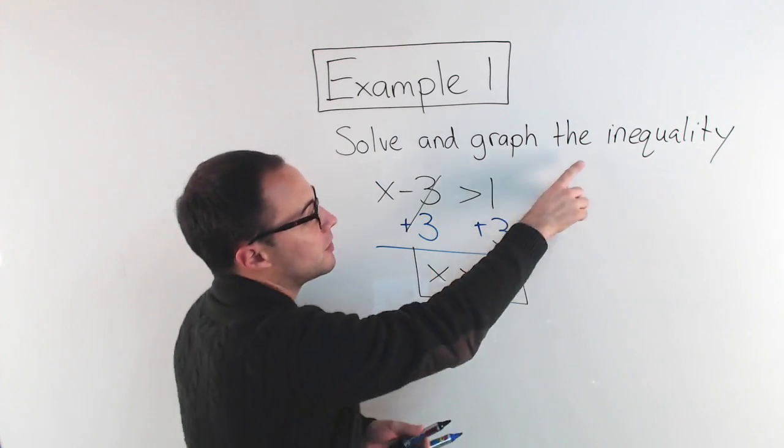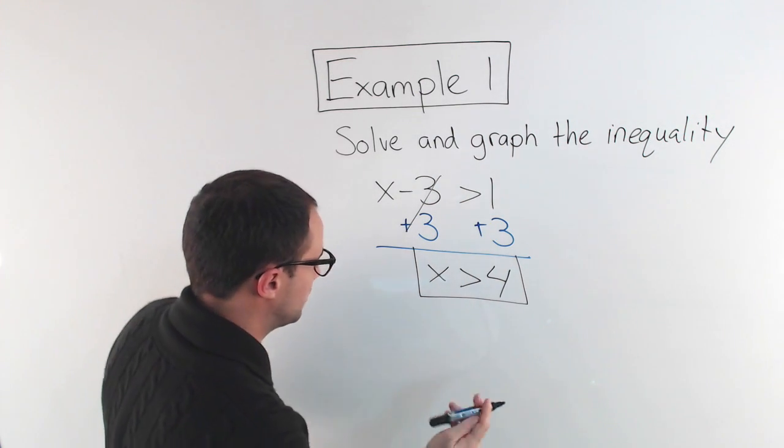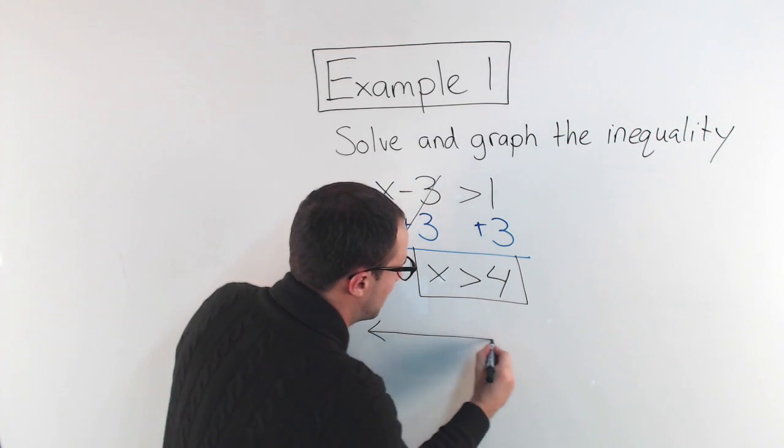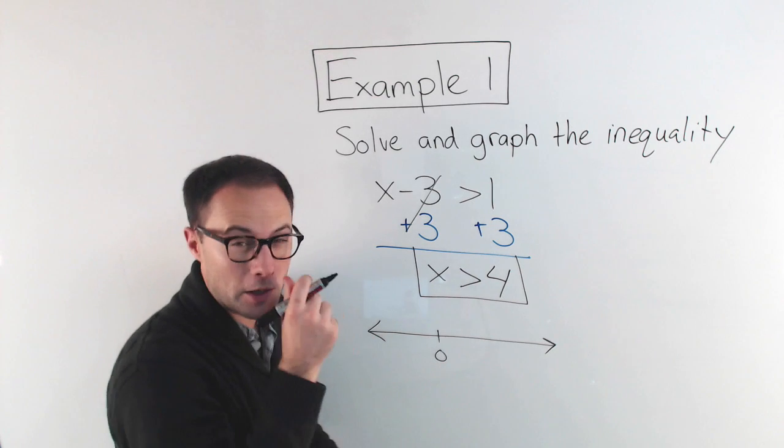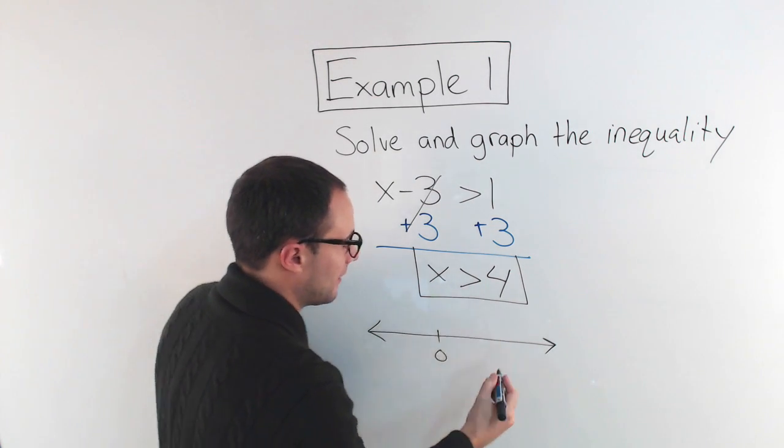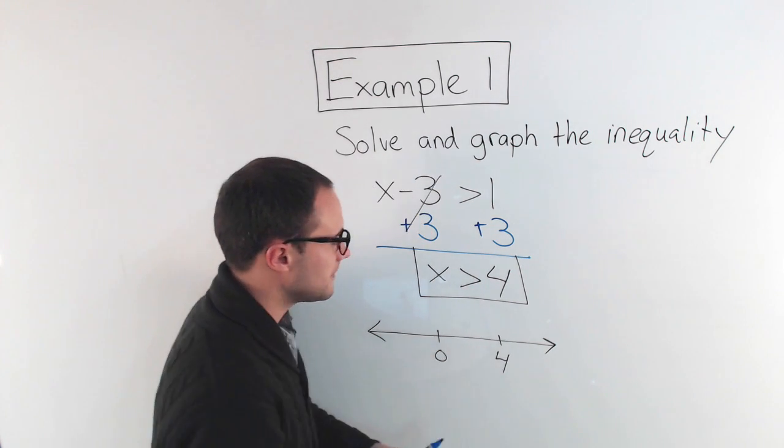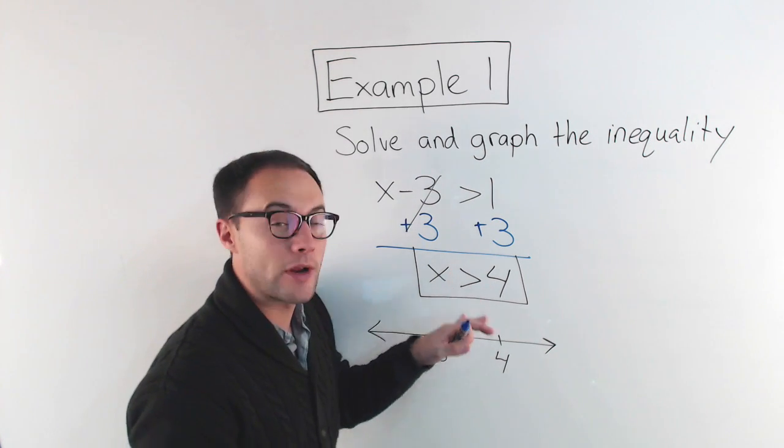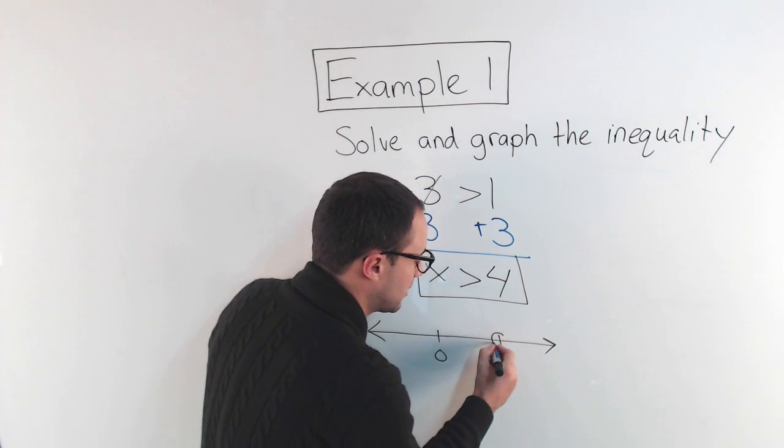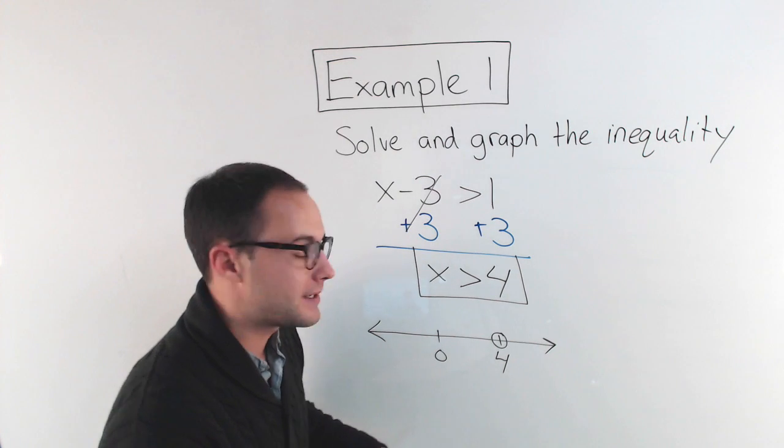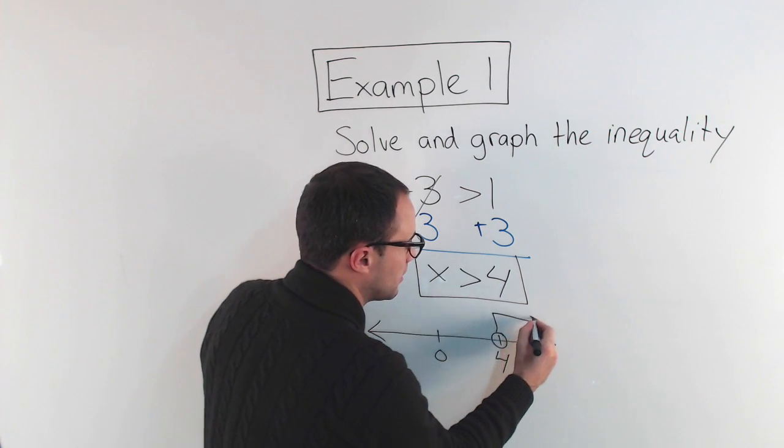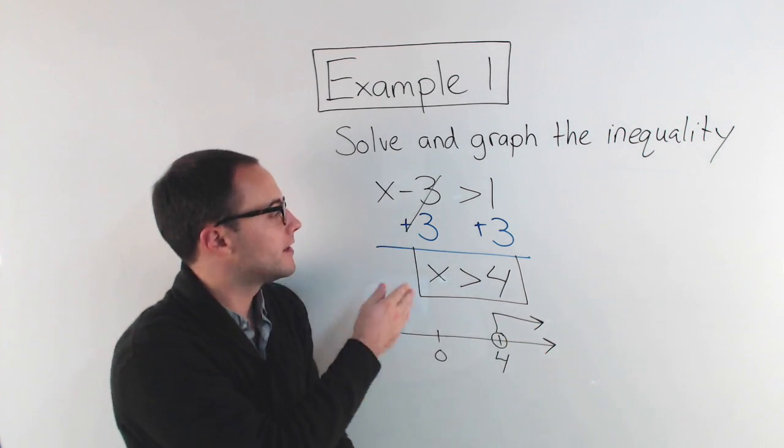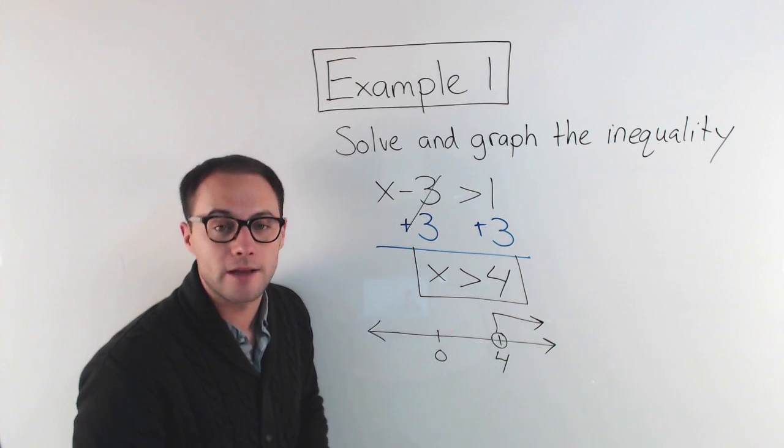Now it's time to graph. So to graph, it's pretty simple. Just draw my number line. I always like to start with a 0, and then I've got 4. Now x is going to be greater than 4. It's not greater than or equal to, so that means it's an open circle or open dot. And it's greater, so it's going to the right. So there is my solution, and there is my graph.